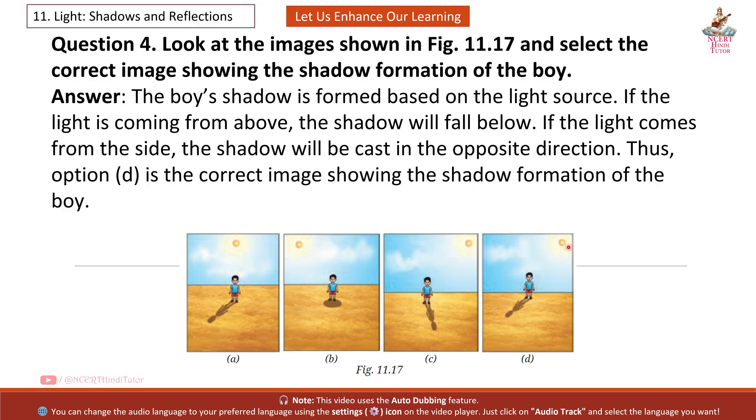So friends, as you can see, the sun is here. So shadow is formed here. This is correct. This is wrong. If sun is here, shadow should be formed here. In option B, sun is here. So shadow should be formed here. In option A, as you can see, sun is above the boy. So the shadow should be like this.